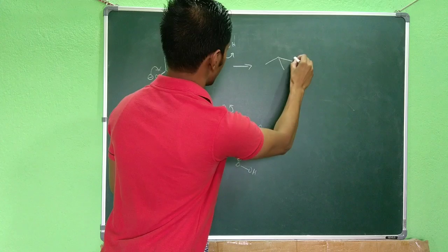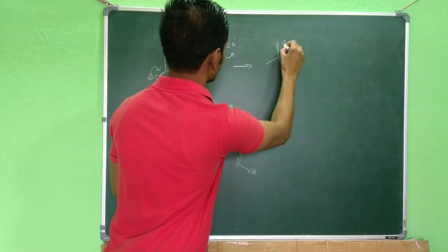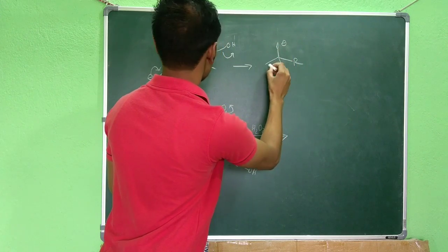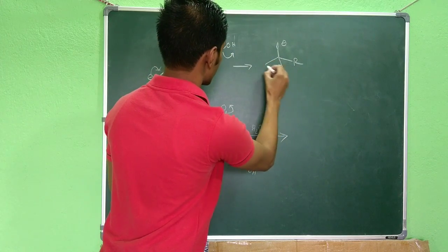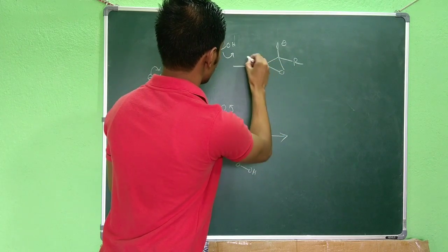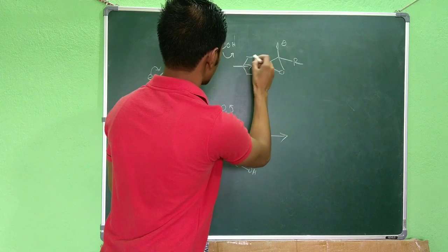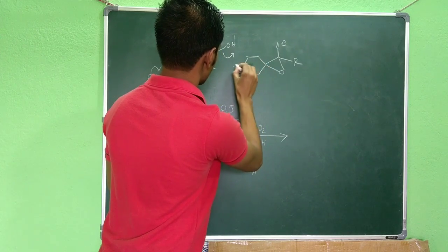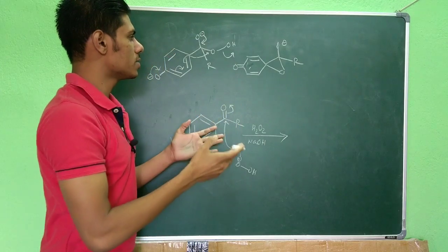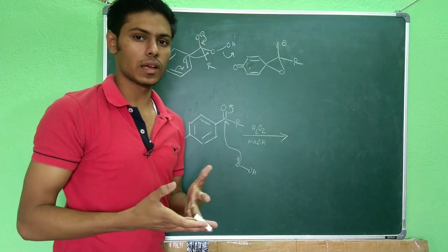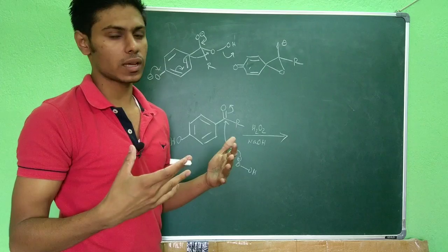So here you have O minus and here basically what you will have, you will have a case like this. So this basically reminds you of the case of the Baeyer-Villiger oxidation or something like that. So it is the same thing like Baeyer-Villiger oxidation. You can see in Baeyer-Villiger oxidation also this type of reaction occurs. So the mechanism is quite similar.